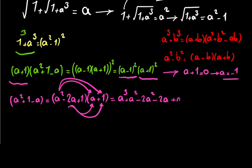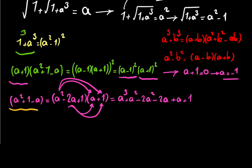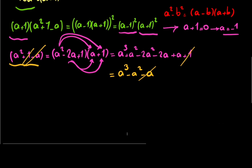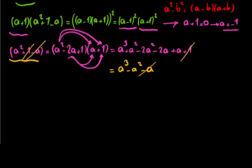And the last term is a plus 1. Looking at both sides, we can see positive 1 and negative a on both sides, so we can remove them. Moving a squared to the right side, we can write 0 equals a squared minus 2a squared, which simplifies to 0 equals a squared times a minus 2.